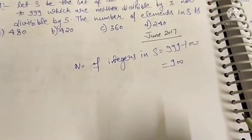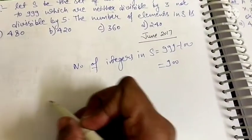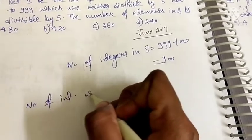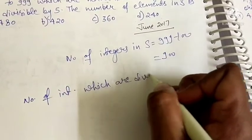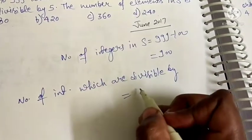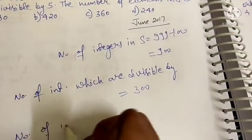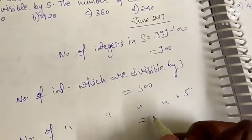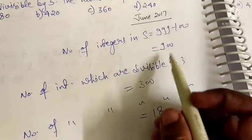We want neither divisible by 3 nor by 5. First, we will find the number of integers which are divisible by 3 — we divide by 3. Then we will find the number of integers divisible by 5 — we divide by 5.